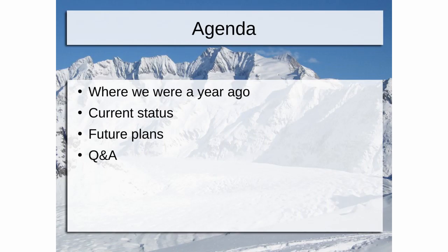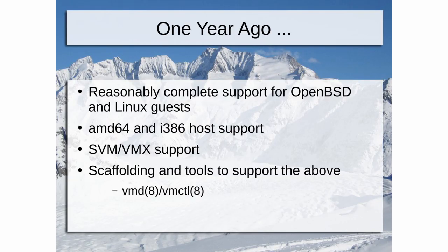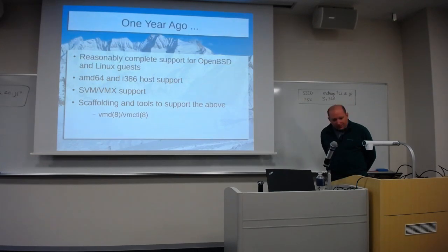As I always do, we'll talk about where we were a year ago, where we are now, future plans, and then Q&A. So one year ago: reasonably complete support for OpenBSD and Linux guests, AMD64 and i386 host support were in SVM and VMX. Basically everything just kind of worked. There were warts and bugs and things that needed to get sorted out, but fundamentally it did what it was supposed to do — VMD, that is. Scaffolding and tools to support the above: VMD, VMCTL — that's how you interface with the hypervisor on OpenBSD.